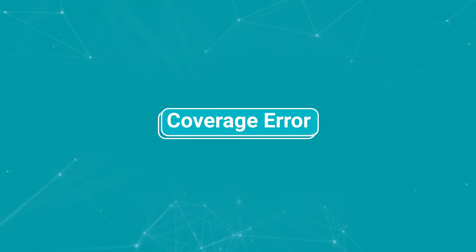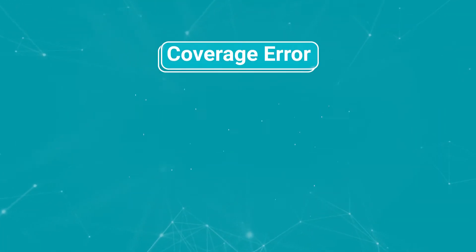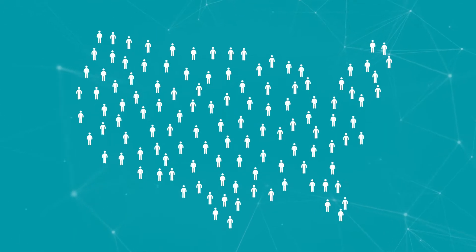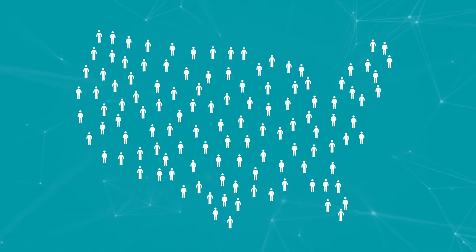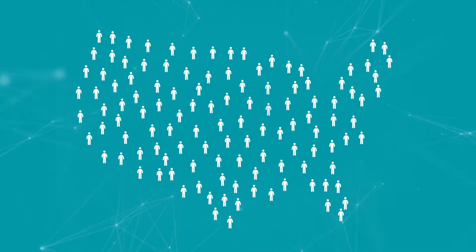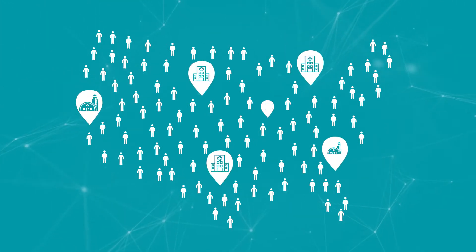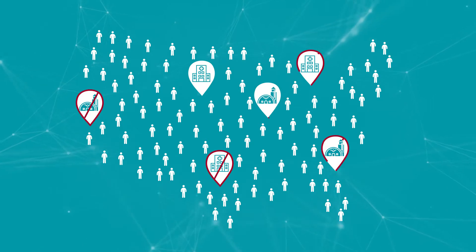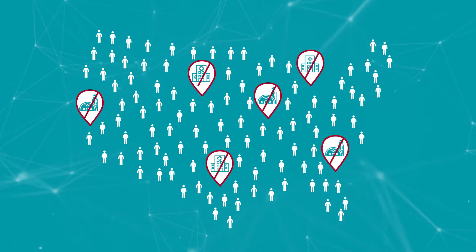Coverage error happens when some members of the population are left out of the survey. For example, although the GSS targets adults living in the United States, people living in institutions like hospitals and military housing are not surveyed.